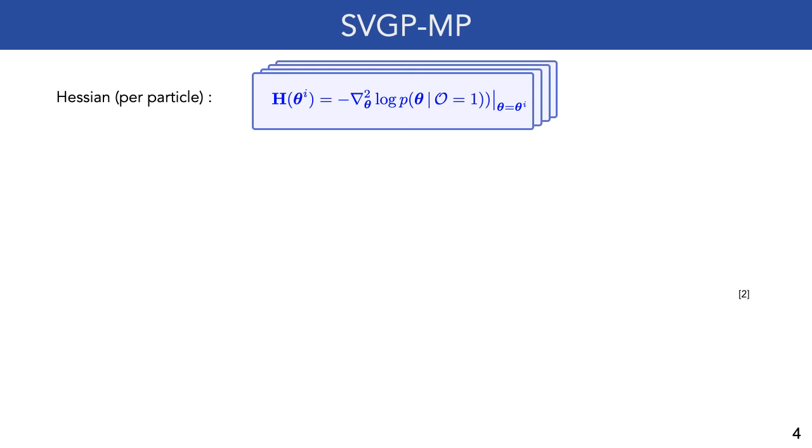Our algorithm, SVGP-MP, modifies Stein particle gradient descent to account for local geometry in the planning problem. We compute the Hessian for each particle in batch, which is then used to construct a positive definite metric.